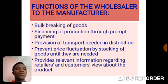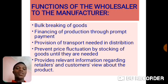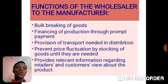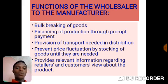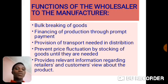Functions of the wholesaler to the manufacturer. Number one: bulk breaking of goods. It is the primary duty of the wholesaler to buy goods in large quantity, store them in his warehouse, and then sell in smaller quantities to the retailer. He can buy from different producers, store them, and then break the bulk selling in smaller quantities. Another function is financing of production through prompt payments.